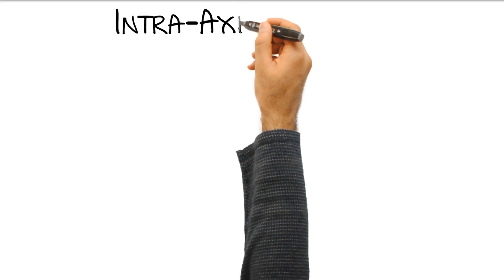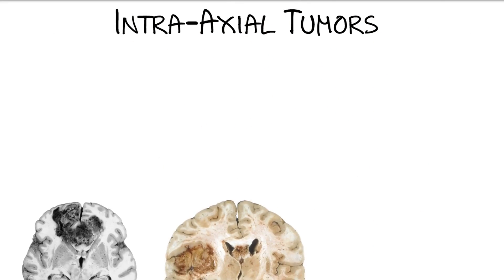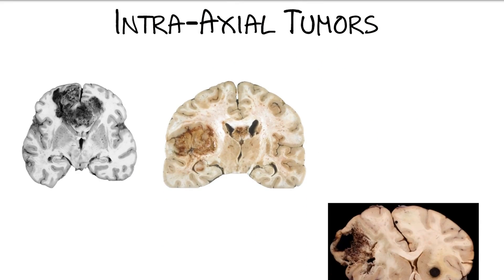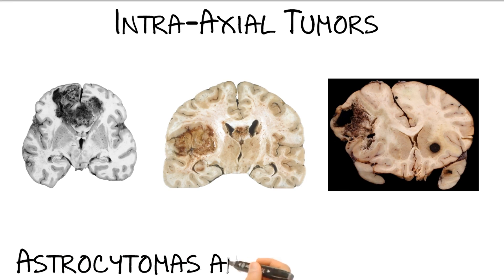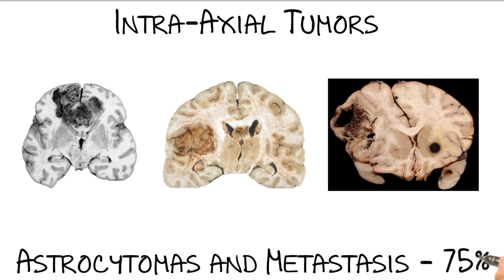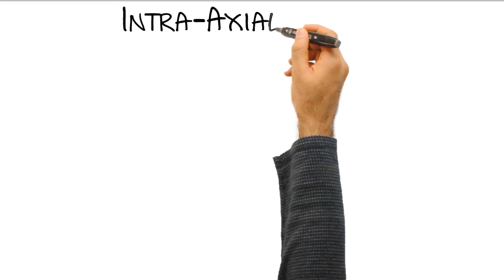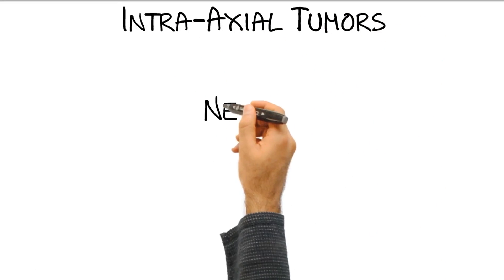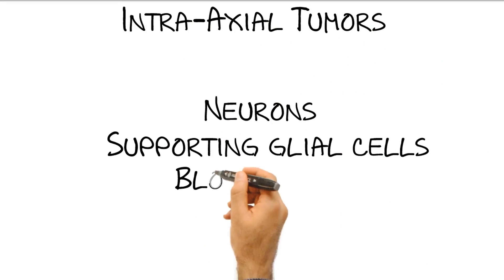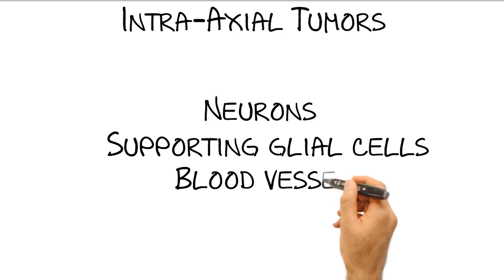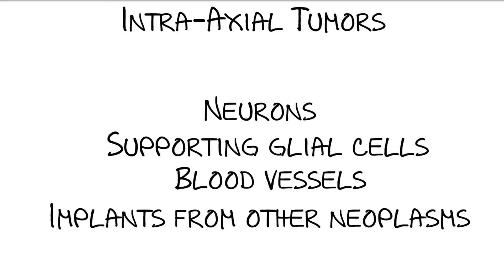In adults, 75% of all intraaxial tumors are either astrocytomas or secondary implants. Intraaxial tumors arise from neurons, supporting glial cells — namely astrocytes, oligodendrocytes, and ependymal cells — in addition to blood vessels and secondary implants.